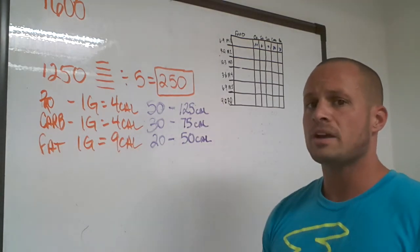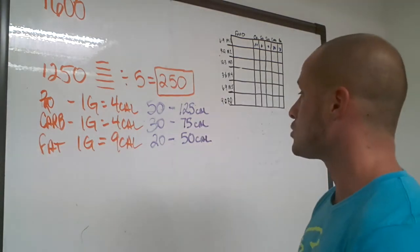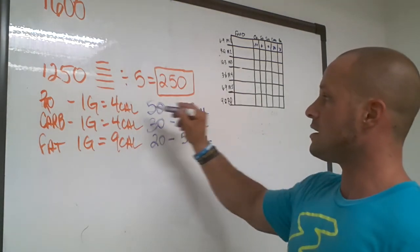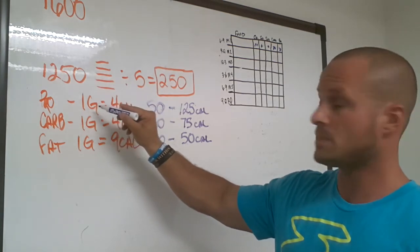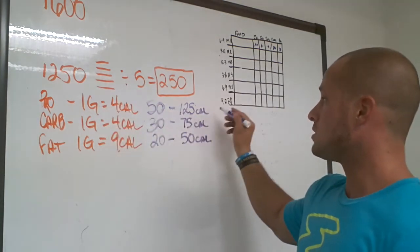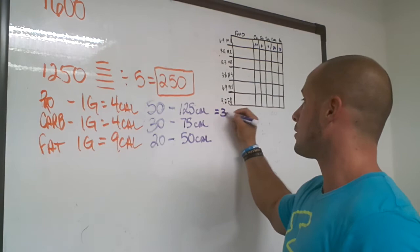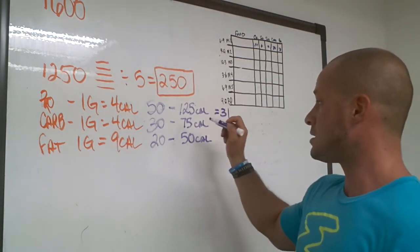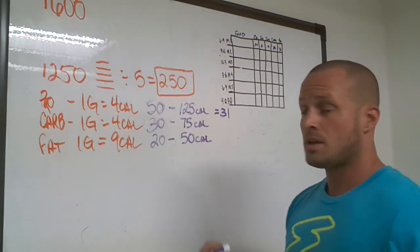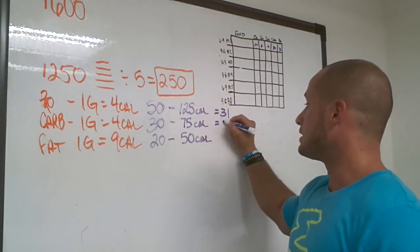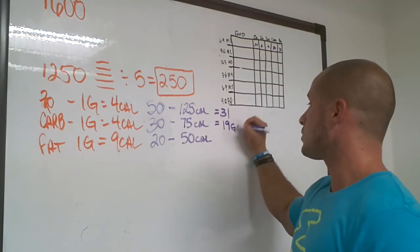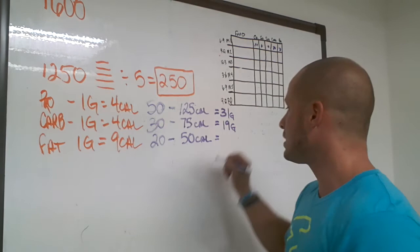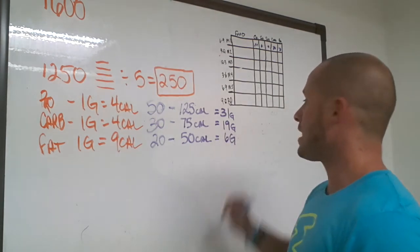It doesn't make a whole lot of sense yet, but we can break it down because we know the formula. With your calories, if there's 4 calories per gram, let's divide 125 by 4, we're going to get about 31 grams of protein. Let's take 75 divided by 4, that's going to equal 19 grams per meal. And with the fat, if we do 50 divided by 9, we're going to get 6 grams of fat per meal.